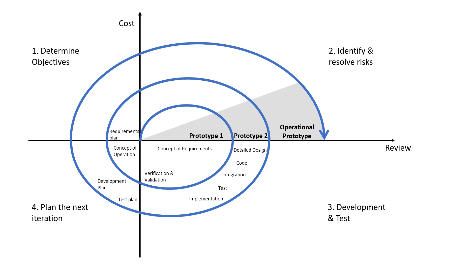In this figure, the y-axis depicts the cumulative cost of the project and the x-axis depicts the number of documents that are there to review. Modern agile processes have advocated and accepted the concepts introduced in this model.